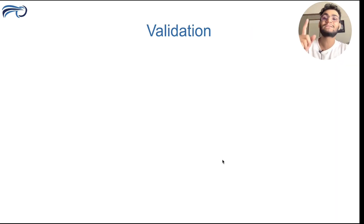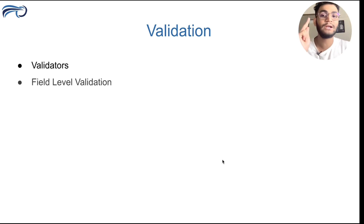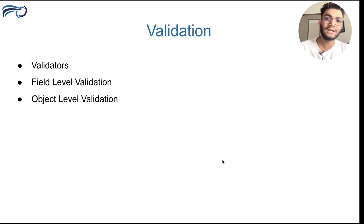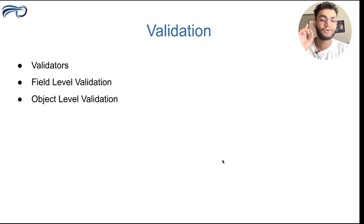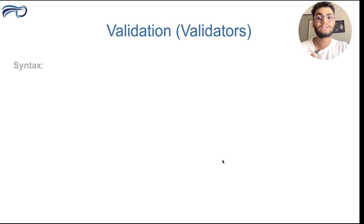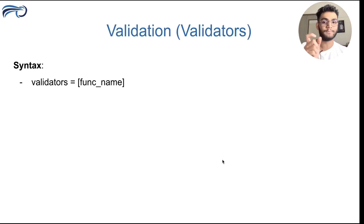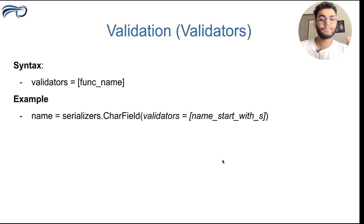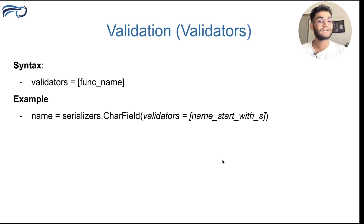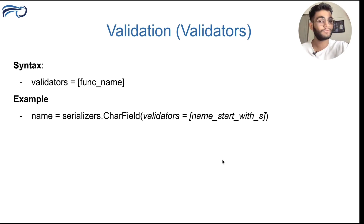Now let's understand all the validations that serializers provide us. The first one is validators, the second is field-level validation, and the third is object-level validation. The syntax for validators is: validators equals a function name — it can have multiple functions inside it. For example, we have a name field which is a CharField, and we want the name to always start with 'S', so we create a function named 'starts_with_s'.